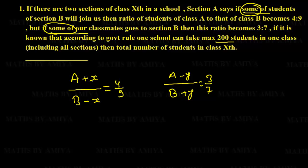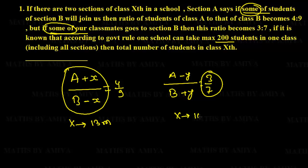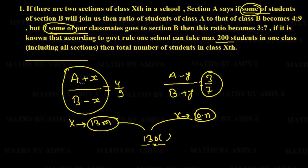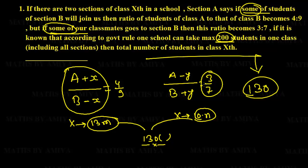Since transfer is within the group, the total is constant. From ratio 4:9, the total must be a multiple of 13. From ratio 3:7, the total must be a multiple of 10. We need a multiple of both 13 and 10, which is the LCM — that is 130. The maximum allowed is 200, and the only multiple of 130 less than 200 is 130. So the total number of students in class 10th is 130.